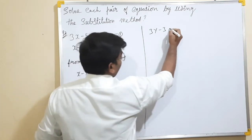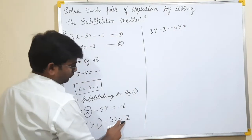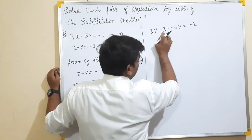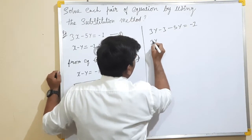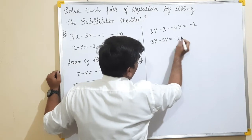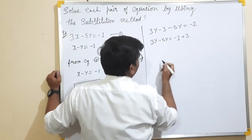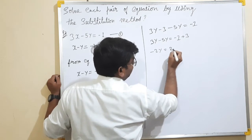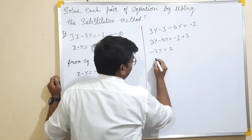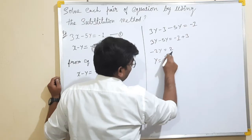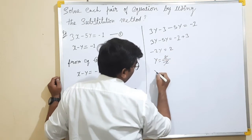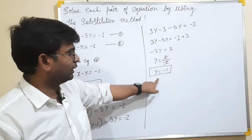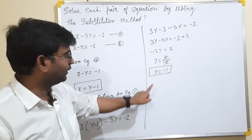So minus 2y minus 3 equals to minus 1. Simplifying: minus 2y equals to minus 1 plus 3, so minus 2y equals to 2, giving y equals to minus 1.